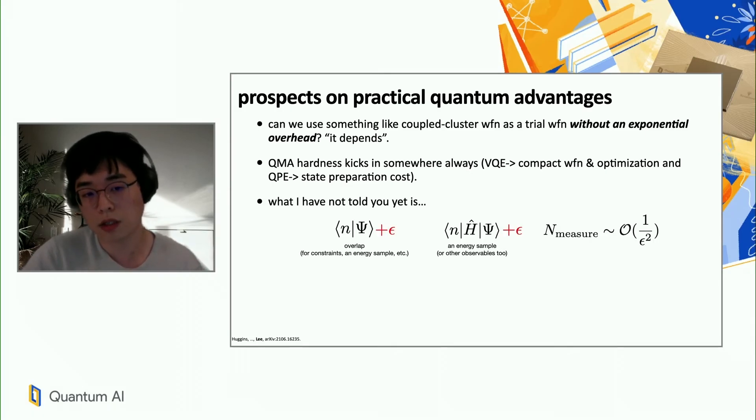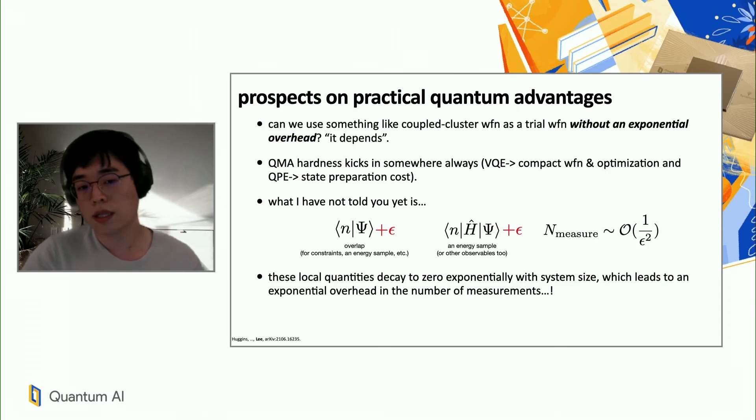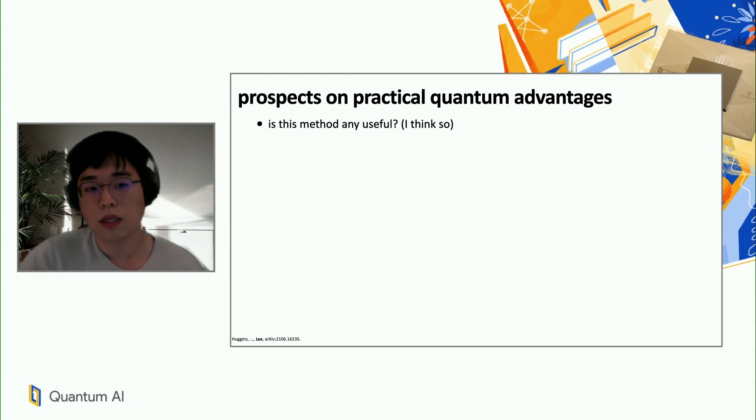And it does kick in in our case, too. So these two are the quantities. One is overlap and one is matrix element. The quantities we need to measure from the quantum computer, they can only be measured up to some additive constant epsilon. And the number of measurements we have to make goes like order one over epsilon square or one over epsilon. And the catch here is that these local quantities, the overlap and overlapping with psi and the matrix element with H psi, these decay to zero exponentially with system size. This means that because we need good relative accuracy of these quantities, so epsilon has to be refined exponentially with system size. That means that we need to make exponentially many measurements as we scale up the system size.